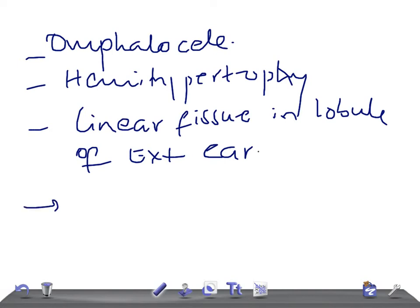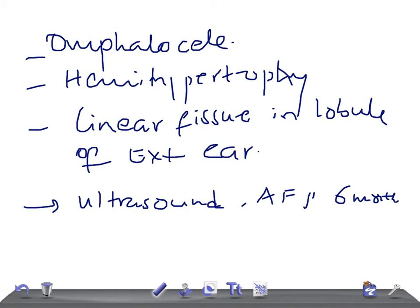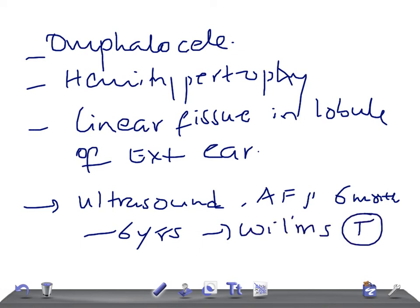So how do you manage these patients? Once the diagnosis is confirmed, obtain an ultrasound and serial serum AFP every six months up to six years of age. We do this to look for the development of abdominal cancers, as these patients are more prone to Wilms tumor and hepatoblastoma.